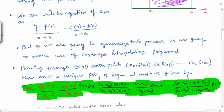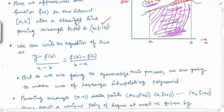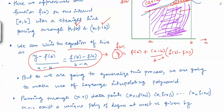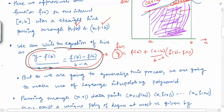We approximate our function with the equation of a straight line joining the points (a, f(a)) and (b, f(b)). The equation of a straight line passing through two points is: y minus f(b) over x minus b equals f(b) minus f(a) over b minus a. From here you get y equals f(b) plus (x minus b) over (b minus a) times (f(b) minus f(a)). Instead of this direct approach, we will use Lagrange interpolating polynomials to generalize.